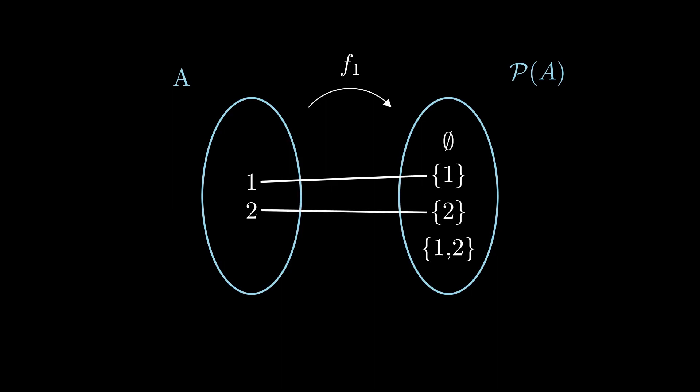You see what happens here? There are elements in our codomain, the power set of A, that are not in our relation F1, and hence, F1 cannot be surjective.